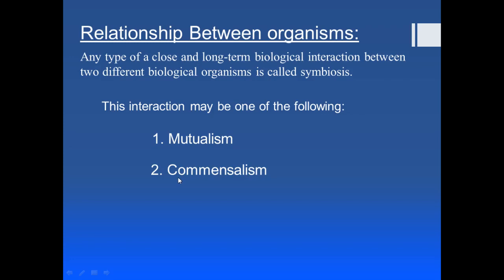The second type is commensalism — a type of symbiosis in which one organism is benefited while the other organism is neither benefited nor harmed. The third type is parasitism, which will be our main focus. Parasitism is that type of relationship in which one organism is benefited whereas the other organism is harmed — for example, Plasmodium benefits while the human body is harmed.